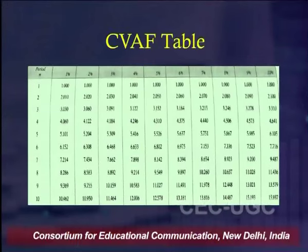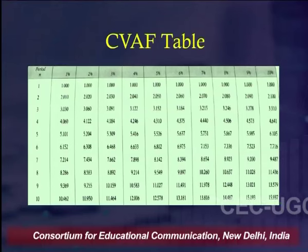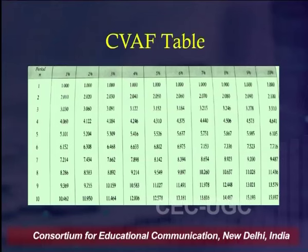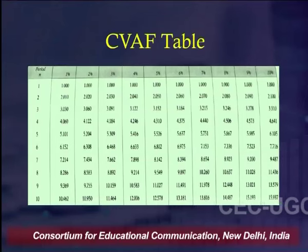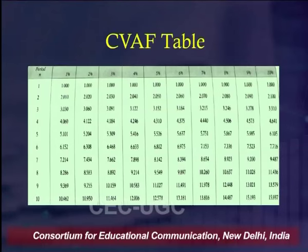The CVAF table looks similar to the CVF table, but it is the compound value annuity factor table. The values in the CVAF table are relatively higher because they are additive — values get added as we progress in number of years. On the left-hand side, time periods are mentioned; in rows, the rate of interest is given. We find the intersection of time period and rate to apply in our formula.